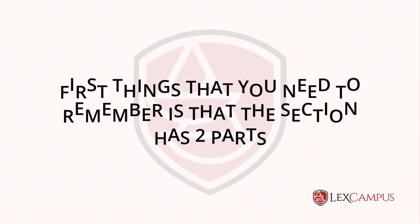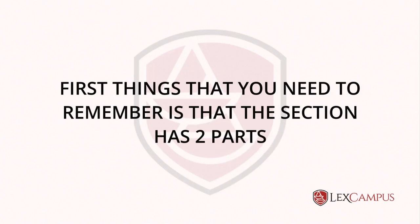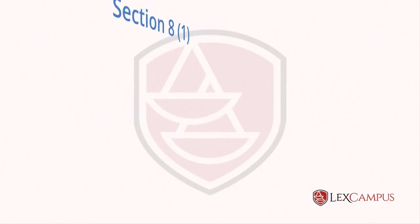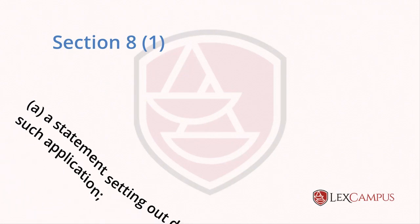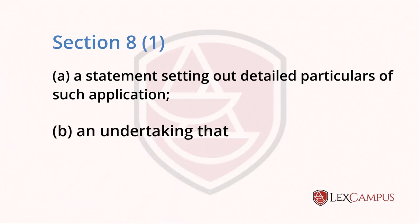The first thing that you need to remember is that Section 8 has two parts. The two parts refer to a statement that is under 8.1(a) — a statement setting out details. There is a statement that the applicant has to make, and the second part is an undertaking that the applicant will keep the controller informed in writing.